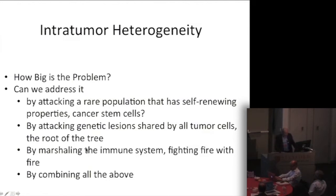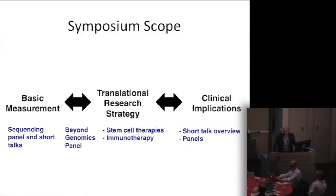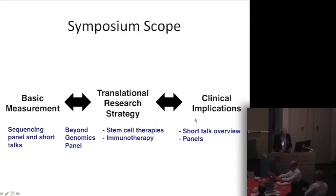A number of our speakers are going to be dealing with various parts of this very question. The symposium today will span technology developments — like sequencing and single-cell analysis — that help define the problem, as well as therapies that address the problem in various ways. Clinical trials are going to be discussed, including the design of trials that take into account the crux of the heterogeneity problem and how we're going to design those trials to prove what we think is true about how to address it.